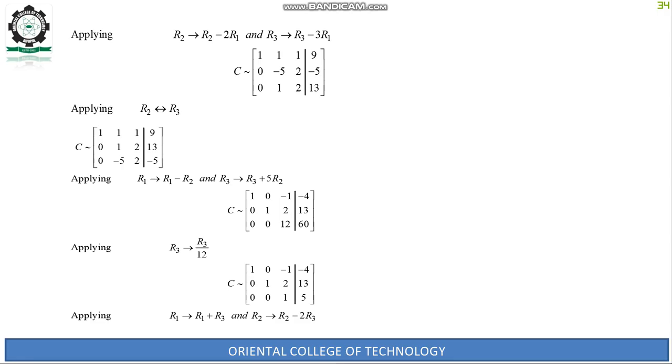Apply R1 → R1 - R2 and R3 → R3 + 5R2. C becomes: 1, 0, -1, -4; 0, 1, 2, 13; 0, 0, 12, 60.